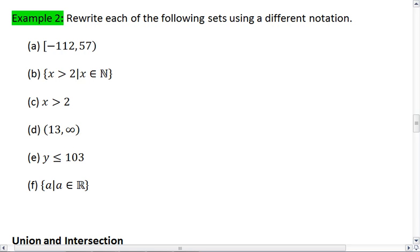In example 2, we're going to rewrite each of the following sets using a different notation. So in A, we have the interval notation negative 112 to 57.